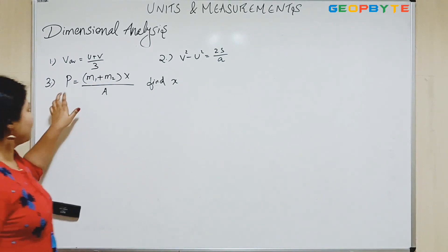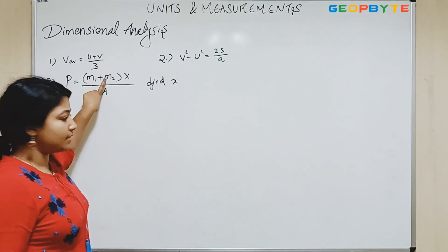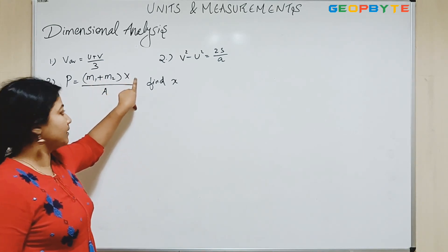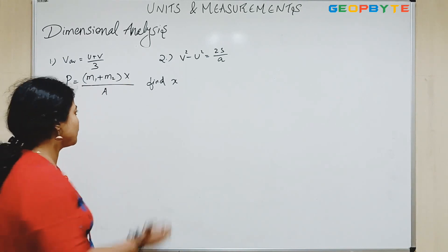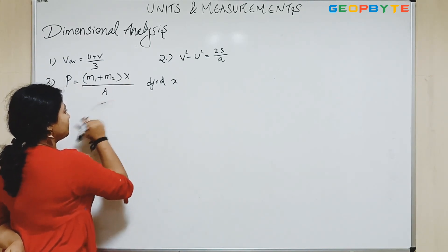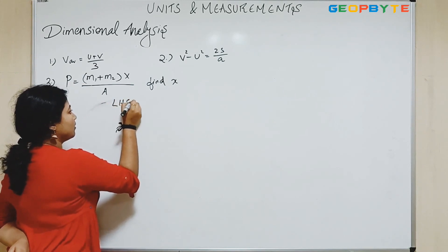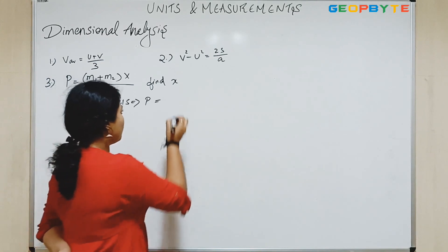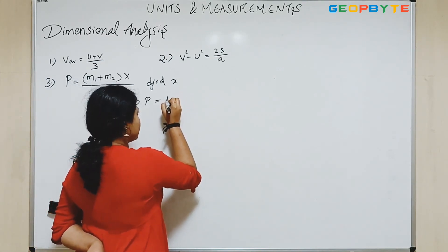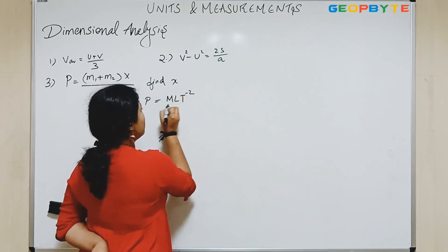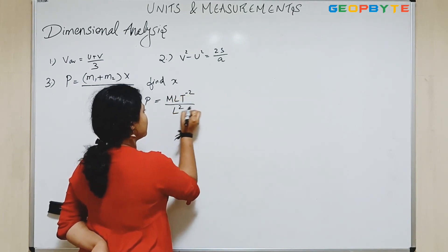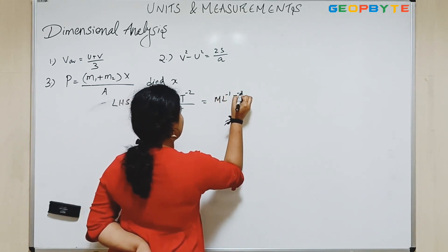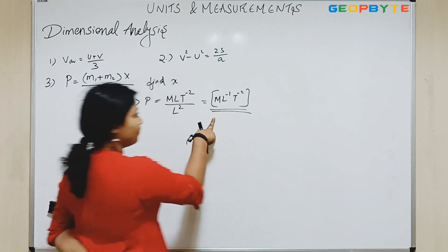In the third question, P is the pressure, M1 and M2 are the masses, and A is the area. We have to find the value of X. So we start with the left-hand side — that is pressure. Pressure is equal to force by area. Force is mass into acceleration: M times L T to the power minus 2, divided by L squared, which is equal to M L to the power minus 1 T to the power minus 2. So this is the dimensional equation of pressure.